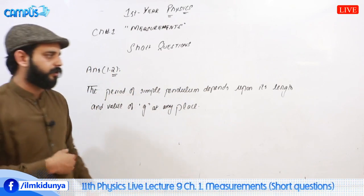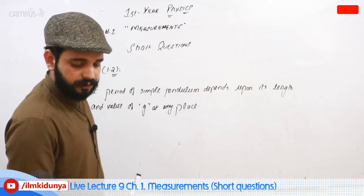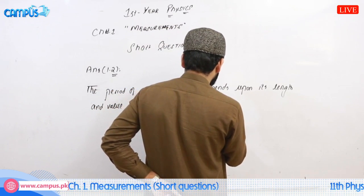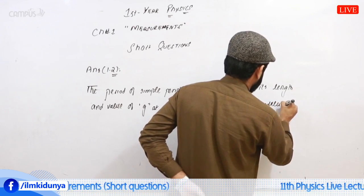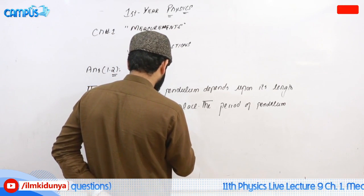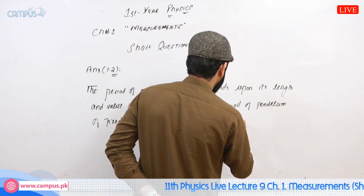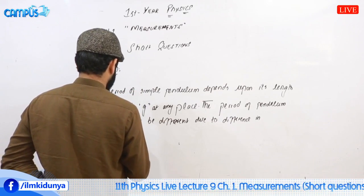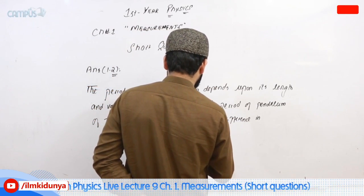For a simple pendulum of fixed length, the value of g is different in different places, so the period of the pendulum may be different at different places. The period of a pendulum of fixed length may differ due to the difference in the value of g at different locations.